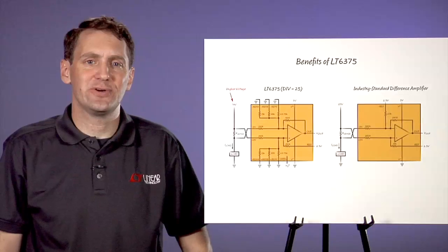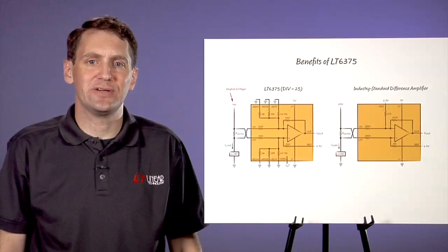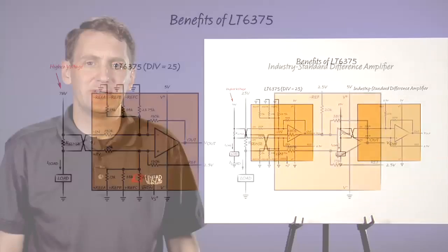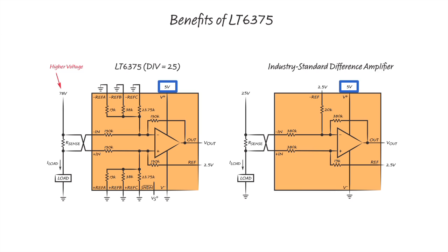A higher resistor divider ratio is also supported by the LT-6375. This allows you to reduce power by using a lower supply voltage while still accurately measuring a high input common mode voltage. Using a resistor divider ratio of 25 in this application allows the LT-6375 to handle a higher input common mode voltage than the alternative amplifiers.